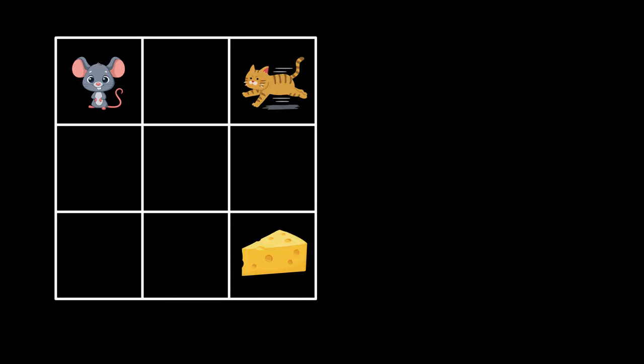To illustrate this, let's revisit the example from our last video. In our 3x3 grid world, we have Jerry starting at 0,0 and Tom at 0,2 with a reward of minus 1 and Cheese at 2,2 with a reward of plus 1. But here's the catch.